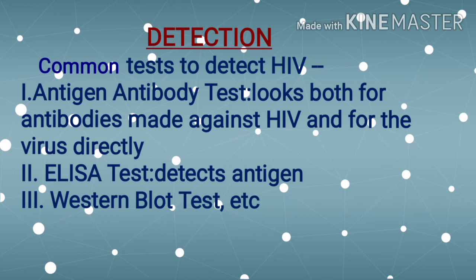Common tests to detect HIV include the antigen-antibody test, which looks both for antibodies made against HIV in the blood and for the virus directly. Next is the ELISA test — ELISA stands for Enzyme-Linked Immunosorbent Assay — which detects the presence of antigen in the body. Another test used for detection is the Western blot test.